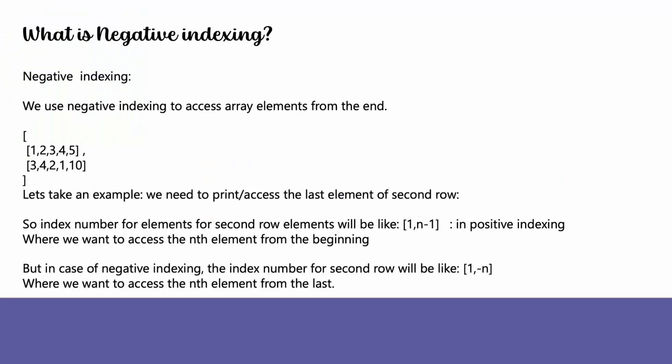First of all, what is negative indexing? In negative indexing, we use negative indexes to access array elements from the end. Let's take an example where we need to print or access the last element of the second row. The index number for the second row will be like 1 comma n minus 1 when using positive indexing, but in case of negative indexing the index number will be 1 comma minus n.